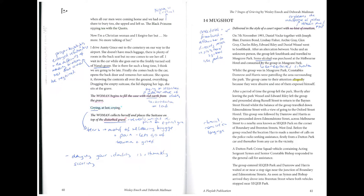Scene 14: Mugshot. Delivered in the style of a court report with no hint of emotion. On 7th November 1993, Daniel Vocky together with Joseph Blair, Damien Bond, Lindsay Fisher, Archie Grey, Glenn Grey, Charles Riley, Edward Riley, and Daniel Weasel went to Southbank. After an altercation between Vocky and an unknown person, the group left Southbank and travelled to Musgrave Park. Some alcohol was purchased at the Melbourne Hotel and consumed by the group in Musgrave Park. Constables Damrow and Harris were patrolling the surrounding area; the group came to their attention. After a period of time, the group left the park.